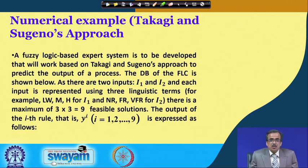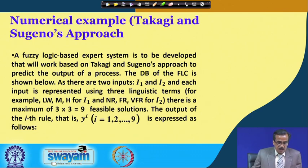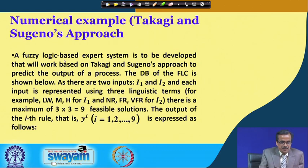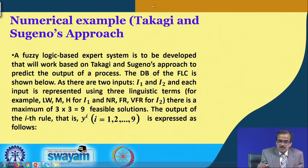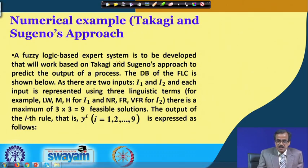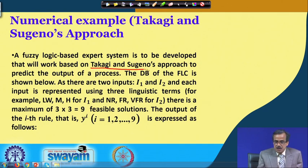To explain the working principle of this approach further, we are going to take the help of a numerical example. The statement is: a fuzzy logic based expert system is to be developed that will work based on Takagi and Sugeno's approach to predict the output of a process. The database of the FLC — meaning the membership function distribution — is shown.